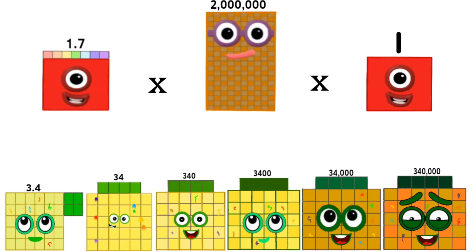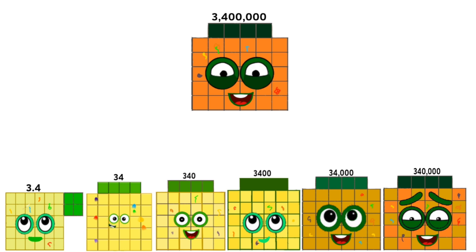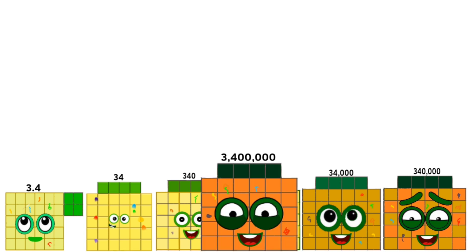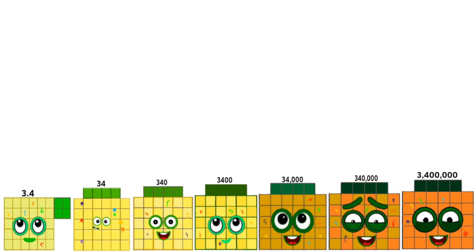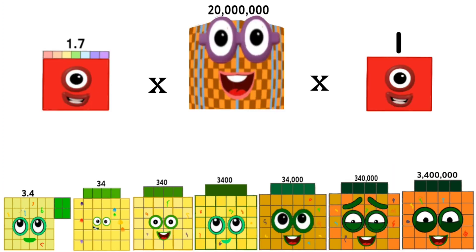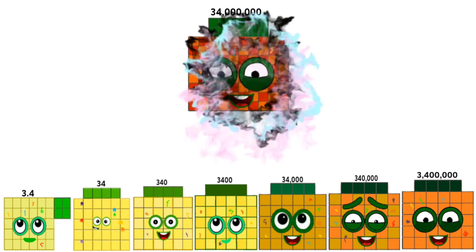1.7 times 2,000,000 times 1 equals 3,400,000. 1.7 times 20,000,000 times 1 equals 34,000,000.